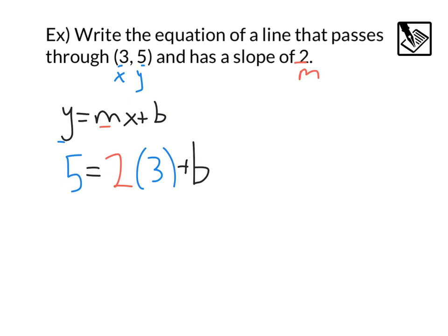And if we use our solving steps from there, we'll get 5 equals 2 times 3 is 6 plus b. Subtract 6 from both sides and we'll get a value of b equals negative 1.